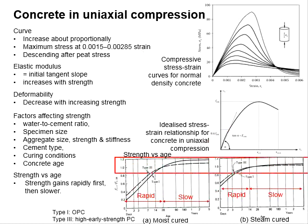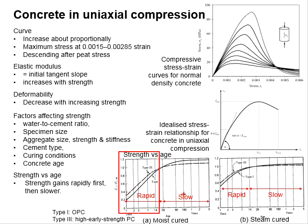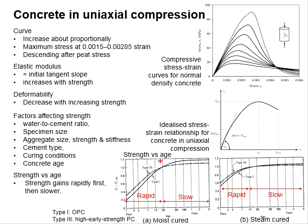Steam curing will make the concrete harden faster, though the final strength will be more or less similar. High early strength Portland cement will have compressive strength develop faster than OPC Type 1. Also, at the early stage, the increment of strength is faster than after day 28. After day 28, the increment is more or less similar with no significant increase in compressive strength.